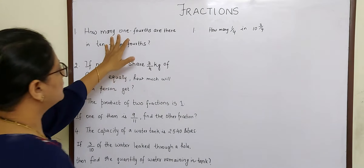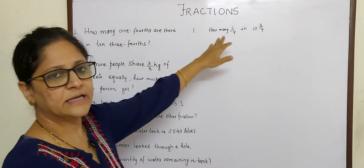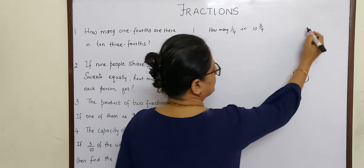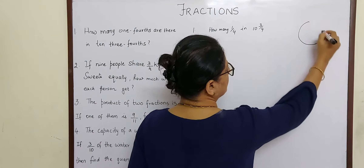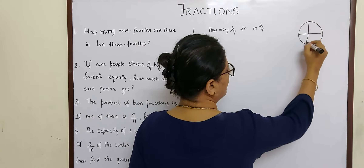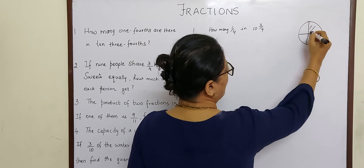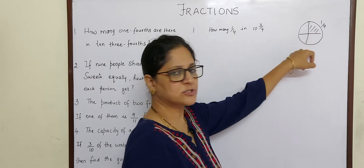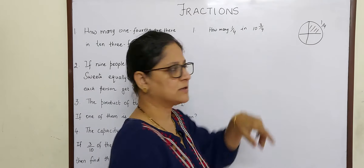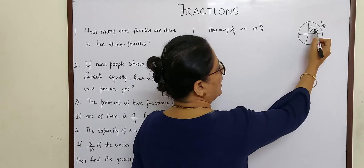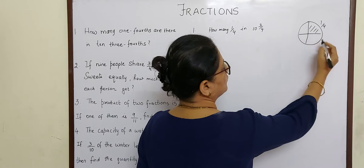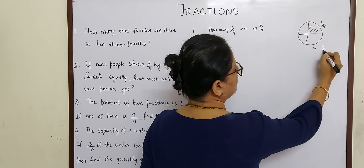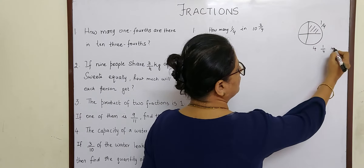I have replaced the words with numbers. Now, you know children, that in a circle, if you divide it into four parts, we have one-fourth. So how many one-fourths do we have in a circle? One, two, three, four. So we have four one-fourths in one circle.